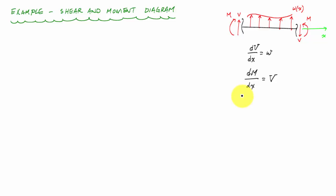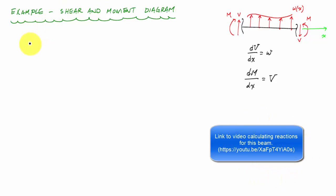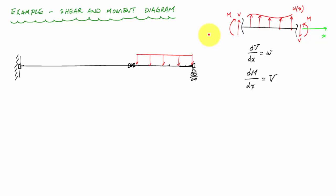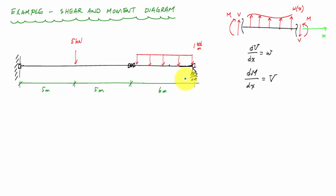Here's what the beam looked like in this problem — I'll put up a link here. The old problem had a fixed end at one point, a roller support at the other end, a hinge right about here, and it was loaded with a distributed load over this span and a five kilonewton concentrated force. The dimensions were five meters, five meters, and six meters. I calculated the reactions: a 55 kilonewton meter concentrated moment at the left fixed support, an eight kilonewton vertical reaction there, and a three kilonewton vertical reaction at the right roller support.